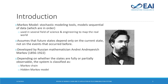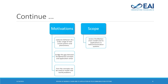Markov model is a type of probabilistic model used in different fields of science and engineering to model the real world. It assumes that the future state depends only on the current state, not on the previous past states. This model was first developed by the Russian mathematician Andrei Markov in 1906. Depending on whether the states are fully or partially observable, the Markov model is classified as Markov chain and Hidden Markov model. Nowadays, Markov chains are used to model different situations, solve problems, and predict the future. The intention of this paper is to fulfill the gap between the fundamental concept of Markov chain and its application.